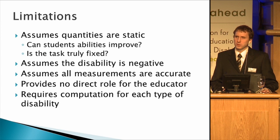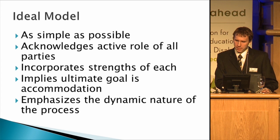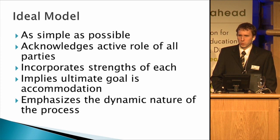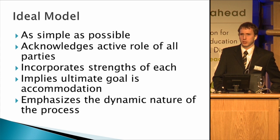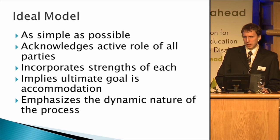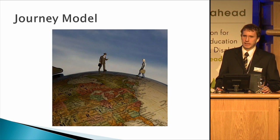So how else could we think about this? The best model should be as simple as possible — good old Occam's razor — that should acknowledge the role of all parties, not just the student, and should incorporate what each can bring to the table. It implies that the ultimate goal is a combination in a dynamic, interactive process. Thinking about this visually: you have the educator and you have the student in space, trying to come together. Each has their own strengths, each is starting from a different place, and the goal is this meeting in the middle.